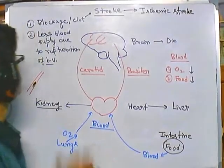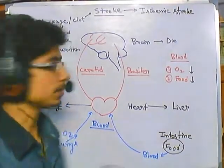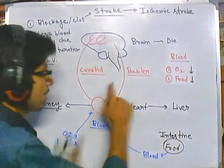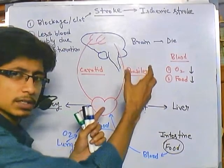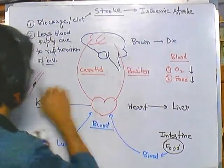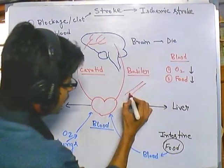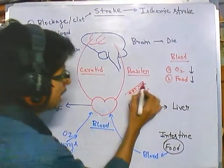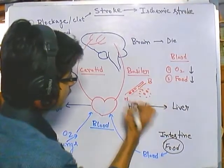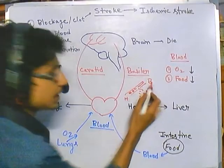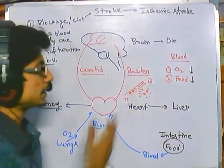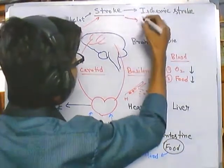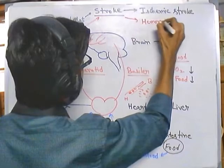The second kind of stroke is due to less blood supply caused by blood vessel rupture. It is possible that blood vessels can be ruptured, sheared, or broken down. If this is the blood vessel and blood is flowing normally, due to any kind of rupture this blood starts to come out. As a result, less blood reaches the brain, brain cells receive less oxygen and food, and this results in stroke. This kind of stroke due to blood vessel shearing or leakage is called hemorrhagic stroke.